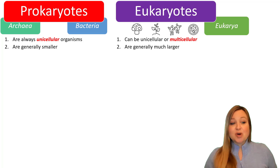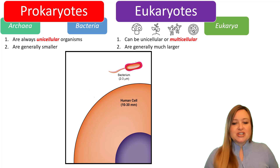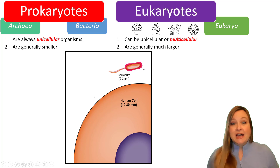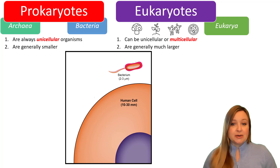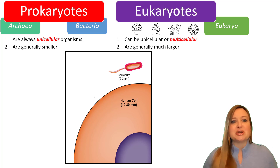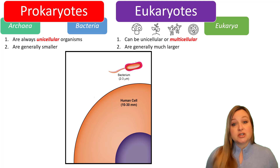Another difference is the size. Prokaryotes are generally smaller, whereas eukaryotes are generally much larger. Here's an illustration of that: a bacterium is generally 1 to 5 microns in size, whereas a human cell, in comparison, is much larger — 2 to 10 times the size of a bacterium. There are always going to be exceptions, with big prokaryotes or small eukaryotes where maybe they'll overlap in size, but generally prokaryotes are going to be smaller and eukaryotic cells are going to be much larger.